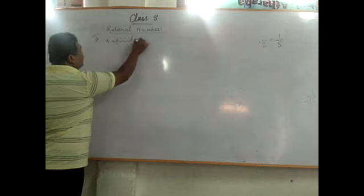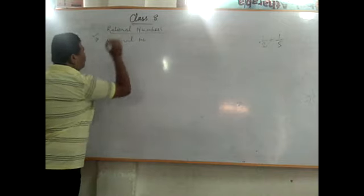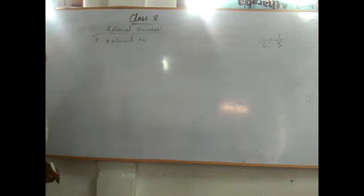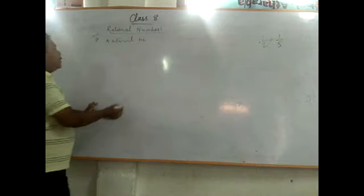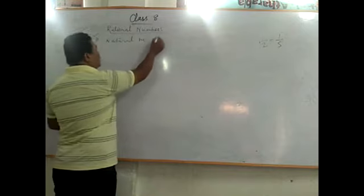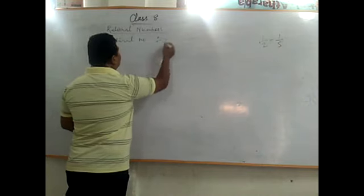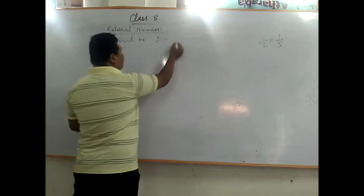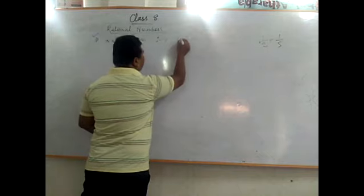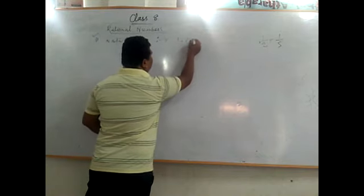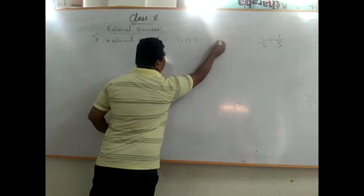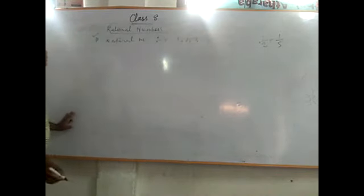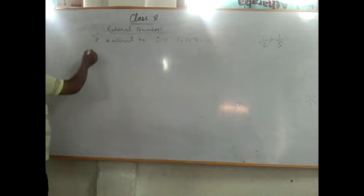Natural number: the number which starts from 1, 2, 3, and so on. This is the natural number. Now, the second type of number is the whole number.